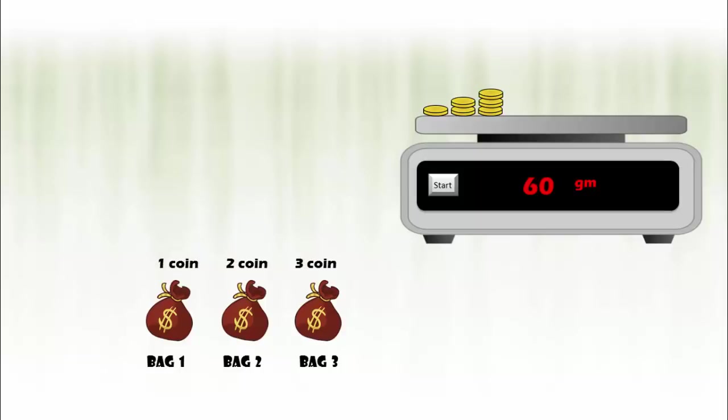But since we have taken out the coins from each bag, at least one coin is defective on the machine, which will result in displaying total weight less than 60 grams. We have one coin from bag 1. If bag 1 is defective, then total weight will be one gram less than 60 grams, that is 59 grams.